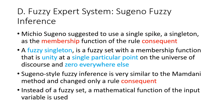The inventor of the technique, Michio Sugeno, suggested using a singleton as the membership function of the rule consequent. This fuzzy singleton is a fuzzy set with a membership function that is unity at a single particular point on the universe of discourse and zero everywhere else.